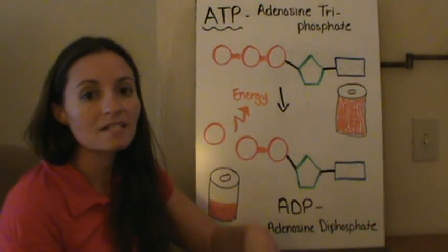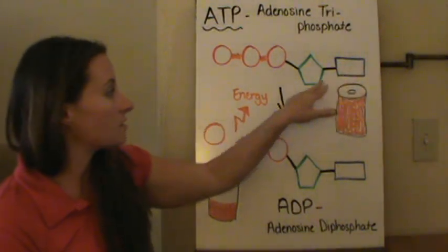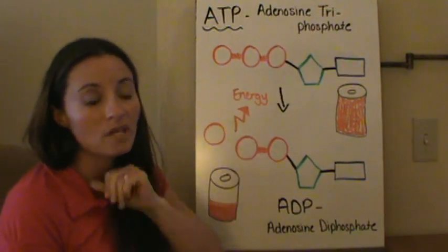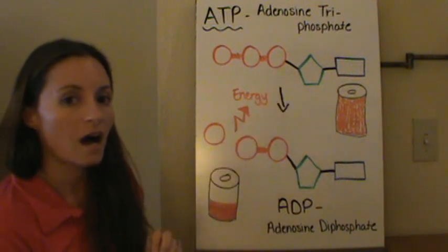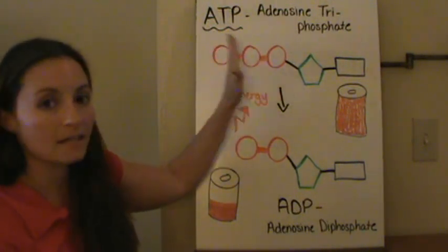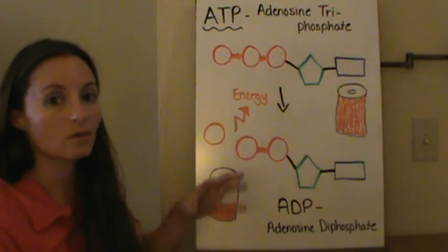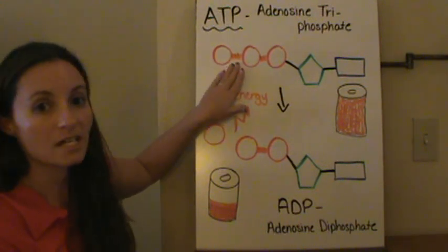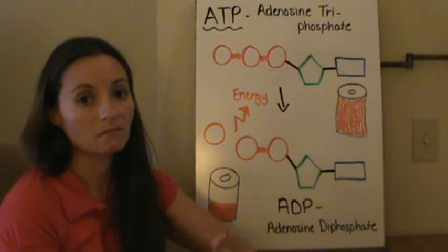Let's talk about ATP for a minute. We discussed ATP when we talked about nucleic acids. Nucleic acids are made up of a nitrogenous base, a five-carbon sugar, and a phosphate. ATP is adenosine triphosphate, meaning it has three phosphate molecules. ATP is an RNA molecule, and when these phosphate pieces are added, that actually stores energy in those bonds. We create an ATP molecule when we break apart our glucose molecule — it's kind of like a full battery that our body can use.